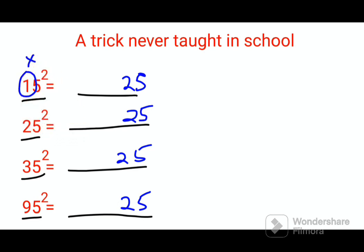For example, 1 - the number which comes after 1 is 2, so 1 into 2 gets you 2. So 225 is the square of 15. Then 2 will get multiplied by 3, so 2 into 3 gets you 6. So 625 is the answer for 25 square. Then 3 will get multiplied by 4.